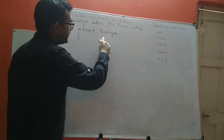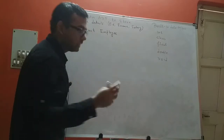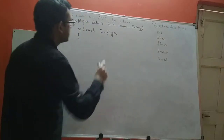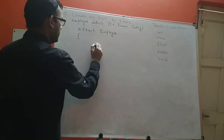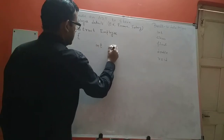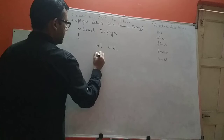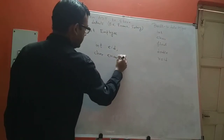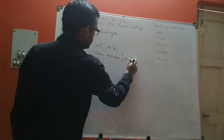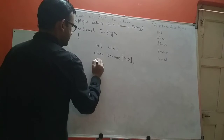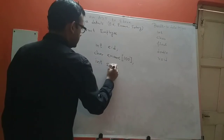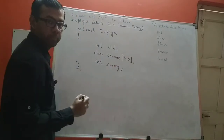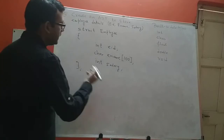Since there are three parts, this data type should have three members. Each member will represent each of these employee details. EID — the employee ID is a number, so I'll use integer type for it. The employee name is a string, which in C programming is represented as a character array. And the salary is again a whole number, so I'll choose int for it.